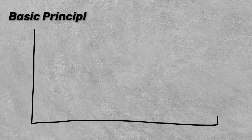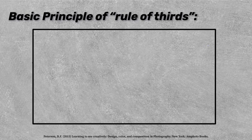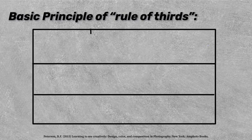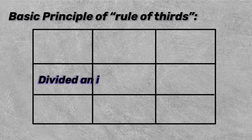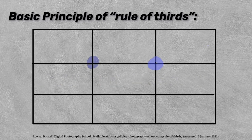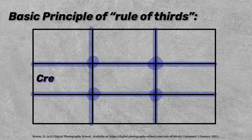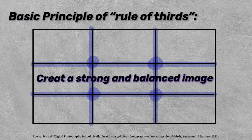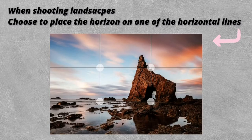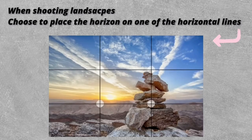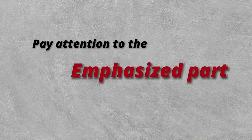The basic principle behind the rule of thirds is to break an image down into thirds, both horizontally and vertically, so that you have nine parts. The four intersection points and the four lines are the best places to place the subject, creating a strong and balanced image. When shooting landscapes, we can choose to place the horizon on one of the horizontal dividing lines, but pay attention to the emphasized part.